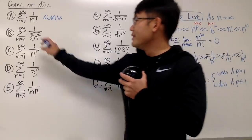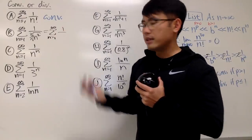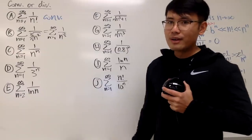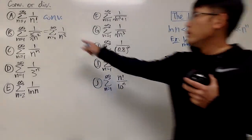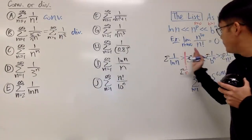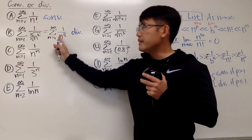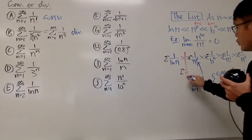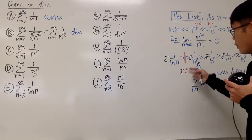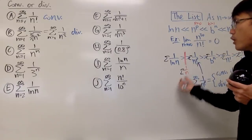For part (a), the series of 1 over n factorial converges, because 1/n! is much smaller than 1/n² on the list. For part (b), the series of 1 over the cube root of n squared equals the sum of 1 over n^(2/3). Since 2/3 < 1, this diverges by the p-series. Also, 1/n^(2/3) is bigger than 1/n, so it's bigger than a known divergent series.